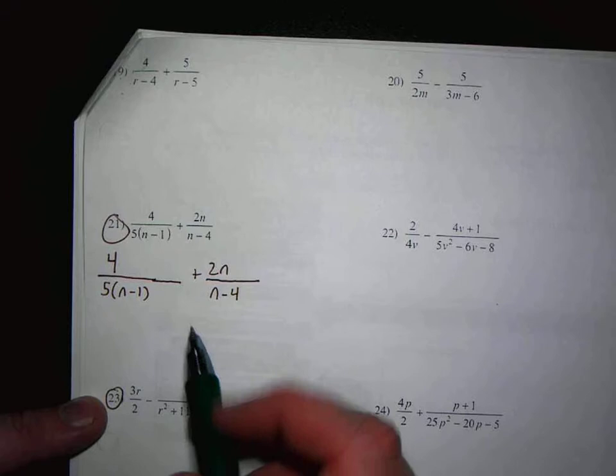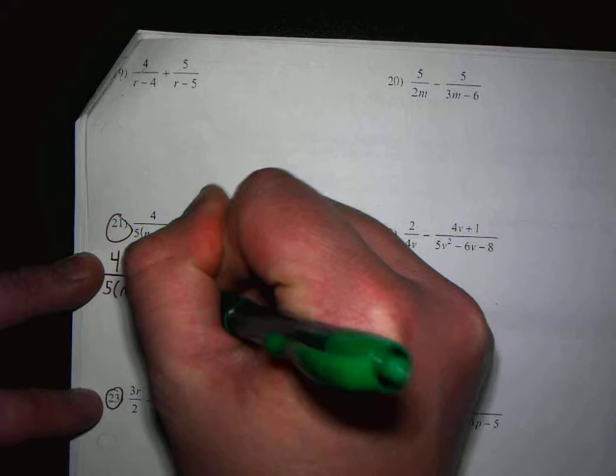So when I give this an (n minus 4), and then this one's going to need a 5(n minus 1).